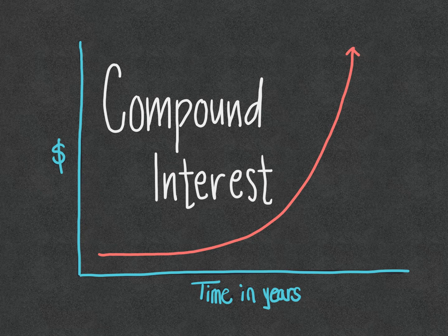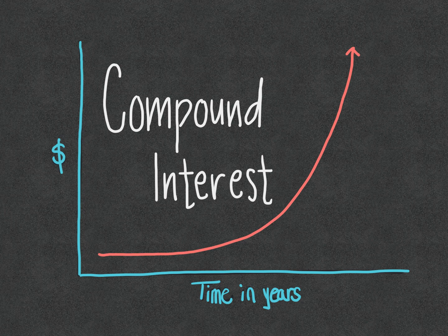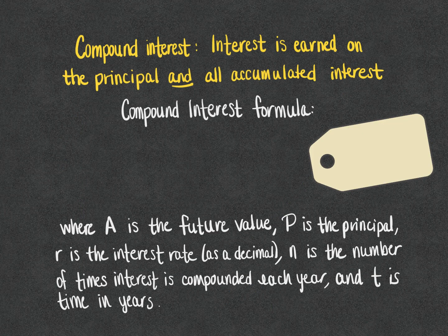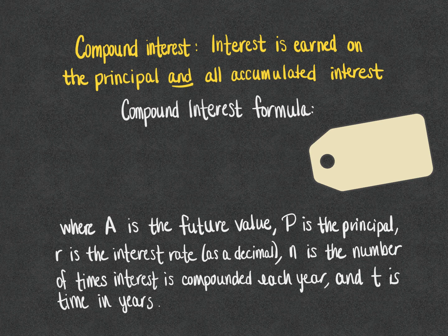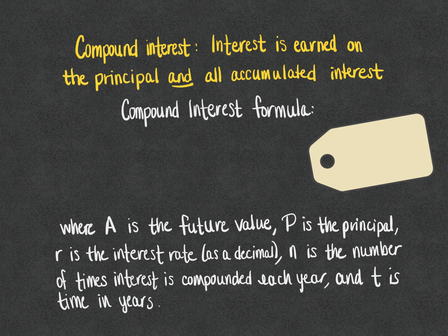In this video we are going to learn about how we calculate compound interest. Compound interest is where you put money in an account and then interest is earned on the principal and all of the previously accumulated interest, which makes your money grow faster in the long run.